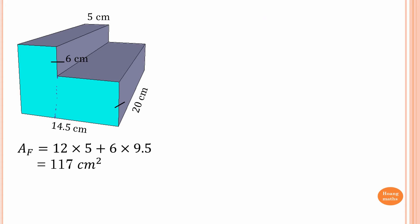The front panel and the back panel are the same, so the combined area of the front and back is 117 times 2, which gives 234 square centimeters.